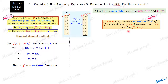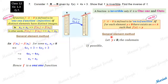Now, is it an onto function? A function defined from set A to set B is called an onto function if, for each element y taken in the codomain, there exists x in the domain such that f(x) = y. Let's take a y in the codomain and, if possible, write this y as 4x + 3 for some x.